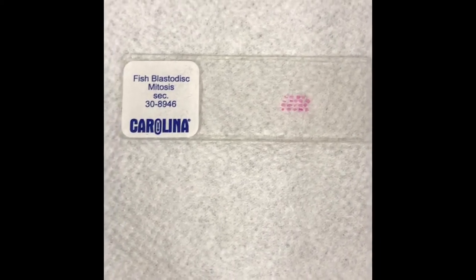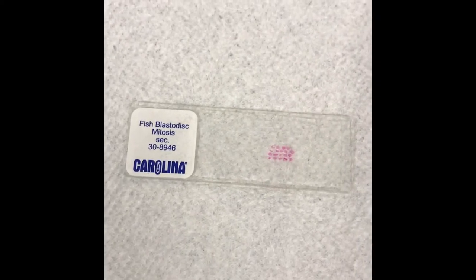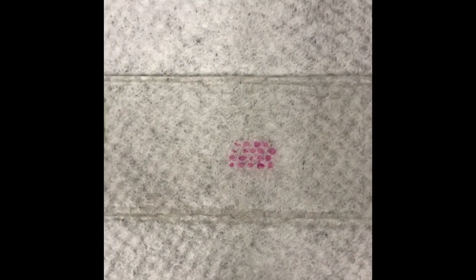The slide that we're going to be using is fish blastodisc. It's fish blastula. These are egg cells that are dividing very rapidly through the cell cycle. And you can see all the little dots. Each one of those dots is a different blastula or hollow ball of cells. So that should give us a lot of cells to look at.